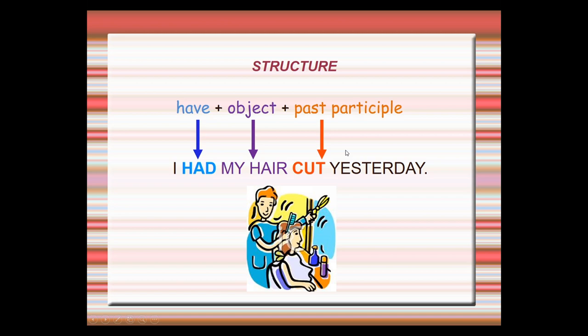Here we have the structure in a simpler way: subject, verb have in the past form, the object, the verb in the past participle form, and a time complement that tells us when the action happened.